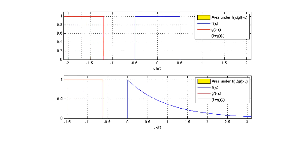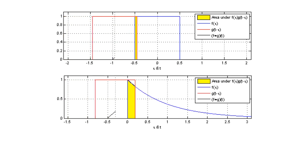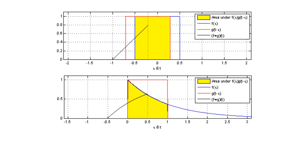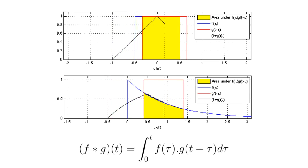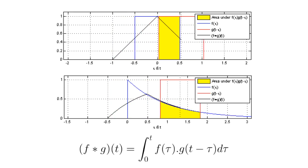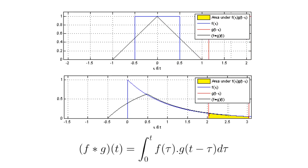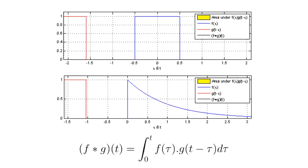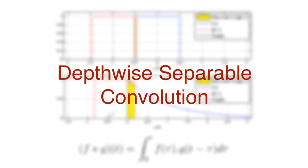Convolution is a measure of overlap between two functions as one slides over the other. Mathematically, it's a sum of products. The standard convolution operation is slow to perform; however, we can speed this up with an alternative method that is the topic of this video: depthwise separable convolution.